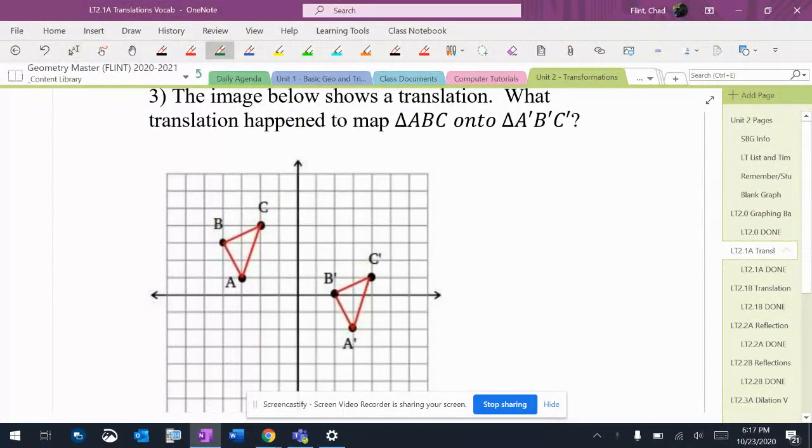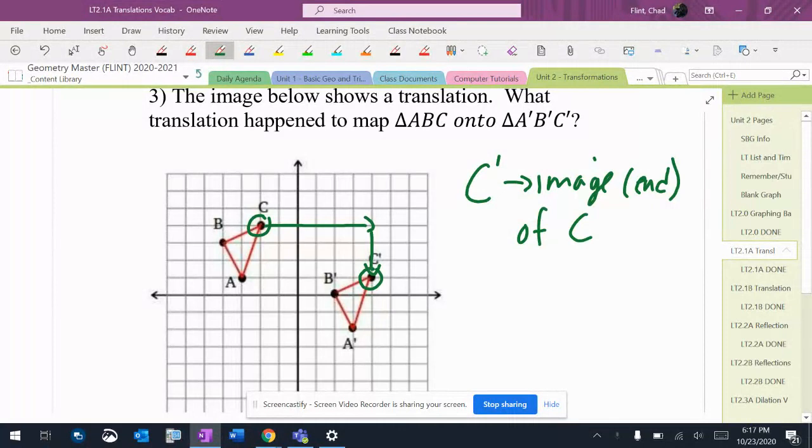I don't need to do all of the points. I just need to pick out two of the points that have the same letter. I'm going to figure out what happened from C over to C prime. Okay, now remember, C prime is the image or the end of C, meaning that's where C ended up.